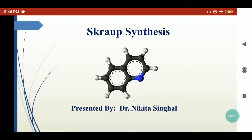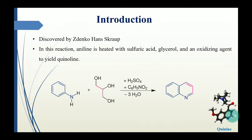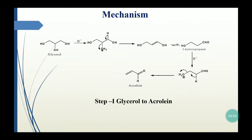In this video I am going to discuss Skraup synthesis. This reaction was discovered by Zdenko Skraup. It is used to synthesize quinoline derivatives where primary aromatic amines are reacted with glycerol in the presence of sulfuric acid and an oxidizing agent to provide quinolines. Quinoline is also useful to synthesize many natural products, so primary aromatic amines can be converted into quinoline by Skraup synthesis.